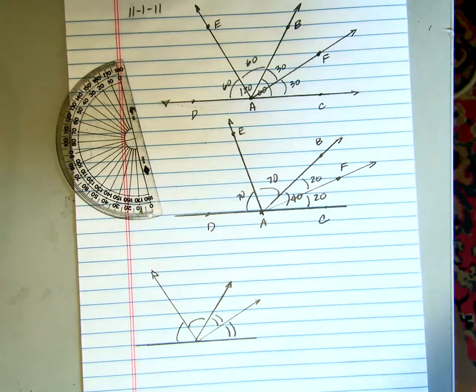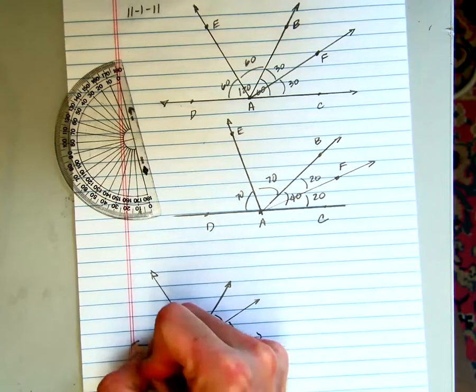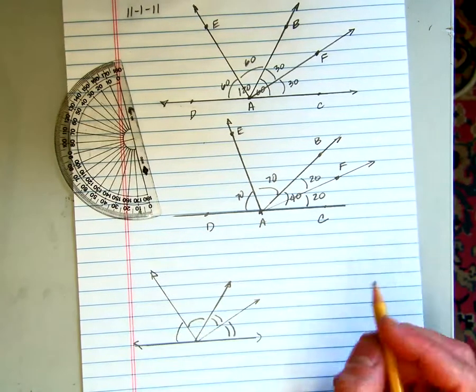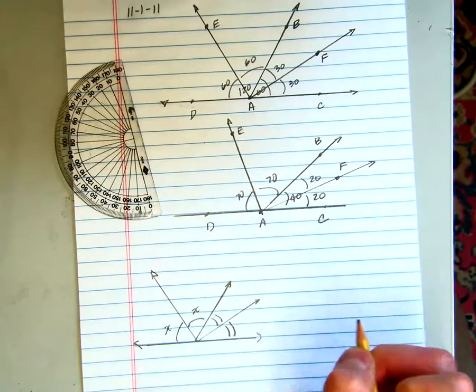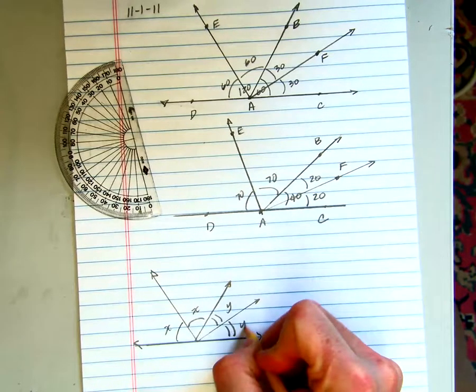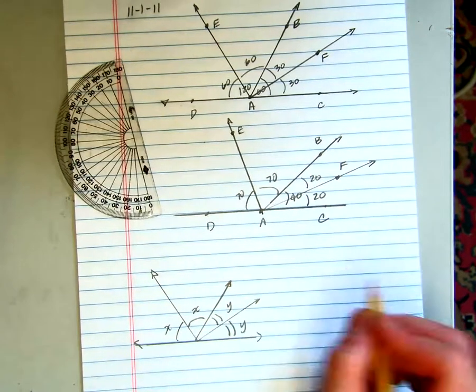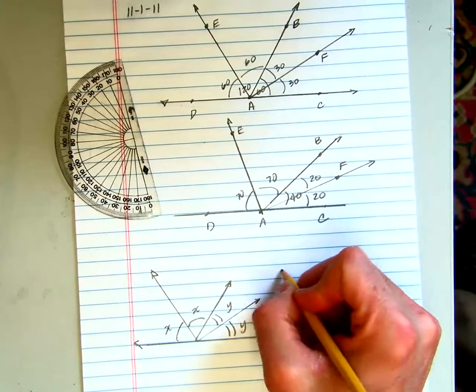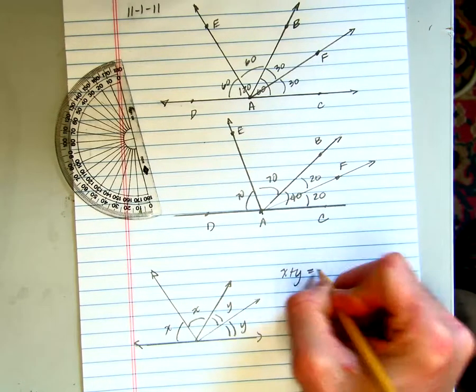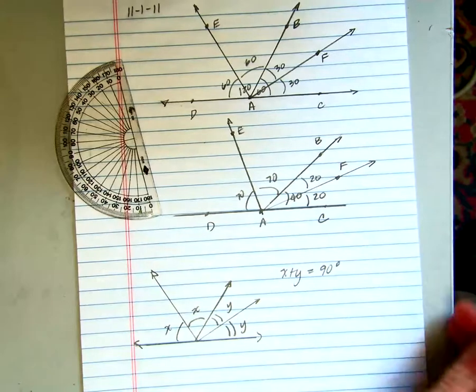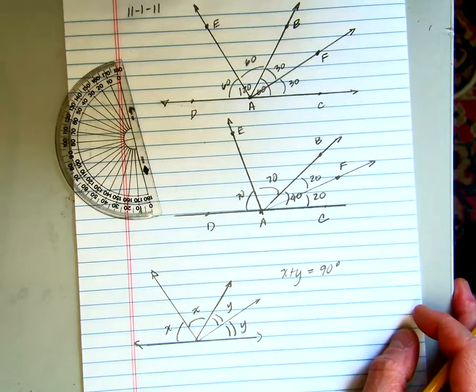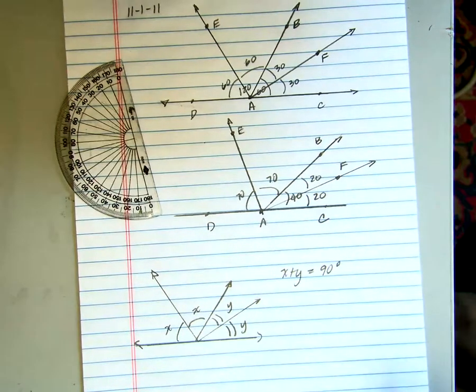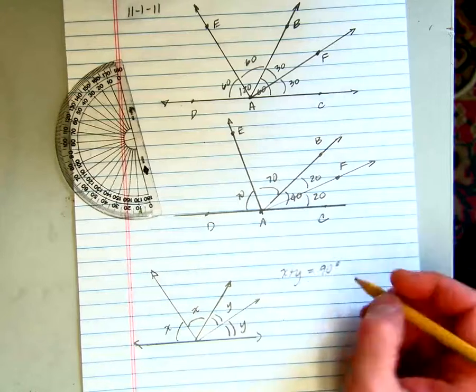We can algebraify this by giving these some algebra variables. So why don't we call this measure x and this measure x and this measure x, and this measure y and this measure y. What we think is true is that x plus y will always be equal to 90 degrees, right? When we're set up in this particular scenario, this is really what we want to show.